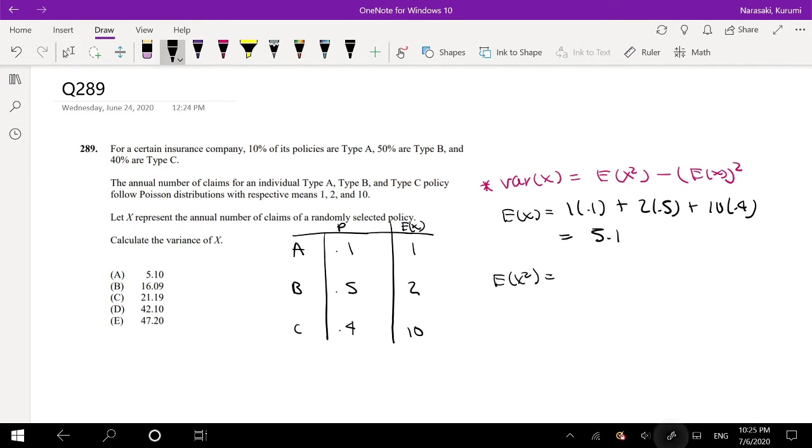We know E(X²) is equal to lambda plus lambda squared. So we're going to take that lambda plus lambda squared: that's (1 + 1²) times 0.1, plus (2 + 2²) times 0.5, plus (10 + 10²) times 0.4.